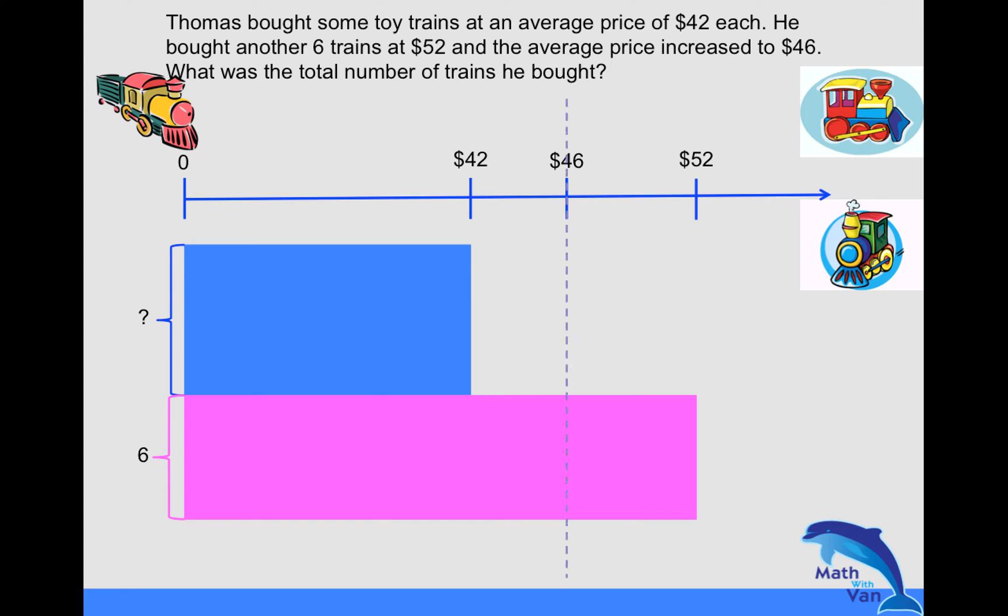So this model actually is pretty obvious that in order for all the toy trains to be 46, I have to take away this portion here and then this portion will go to fill out this gap, right? So effectively, let's call it purple. The purple portion here must go to this side and fill out the gap so that all in total, all the trains would have an average price of 46 dollars.